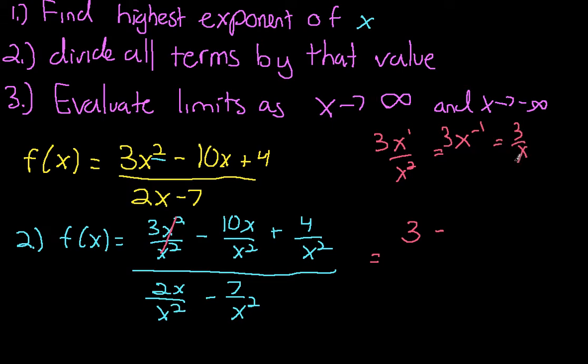So this would become, sorry, that should have been a 10. So all these 3s should be 10s, very sorry about that. So this term should be 10 over x and then plus 4 over x squared. Divided by, same process, this would be 2 over x minus 7 over x squared.